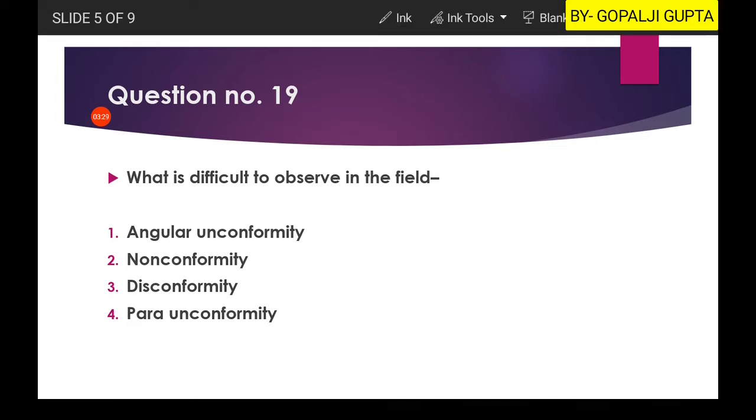Now 19th question is which is difficult to observe in the field? There are different unconformities in the options like angular unconformity, nonconformity, disconformity, and para unconformity.